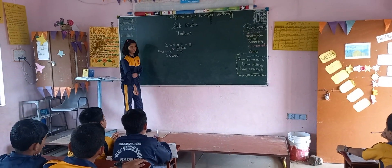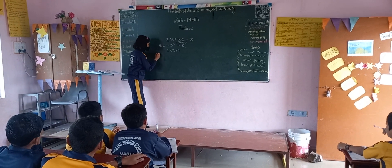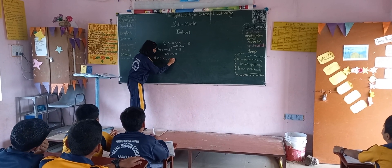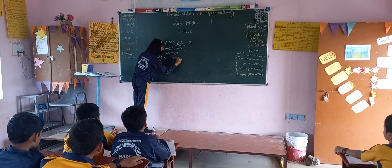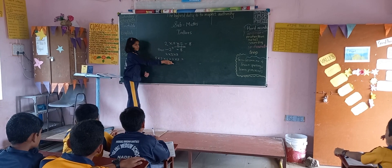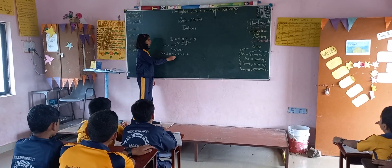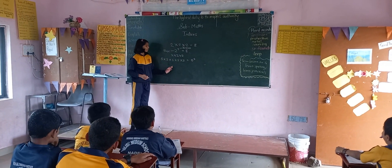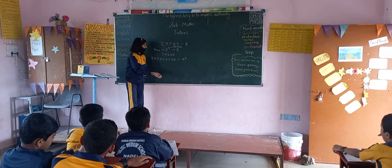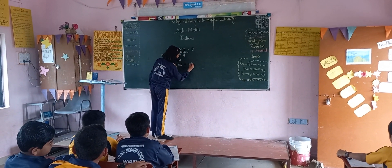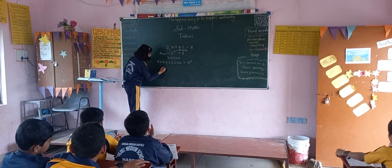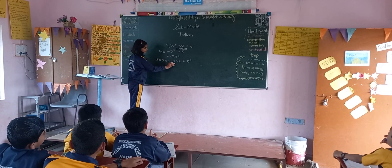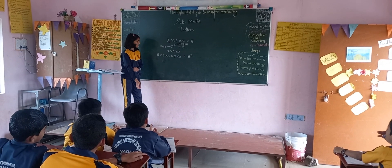Now we will see another example. Here, 5 is multiplied 5 times, so the index will be 5. This means 5 raised to 5. Now we will also find out the value of this: 5 multiplied by 5 multiplied by 5 multiplied by 5 multiplied by 5 — 5 times 5.